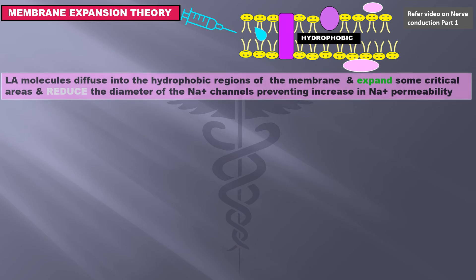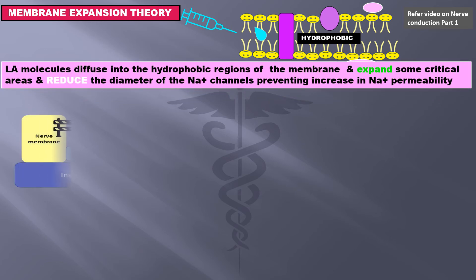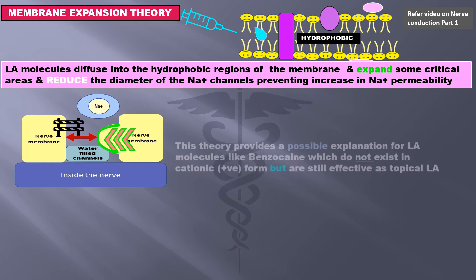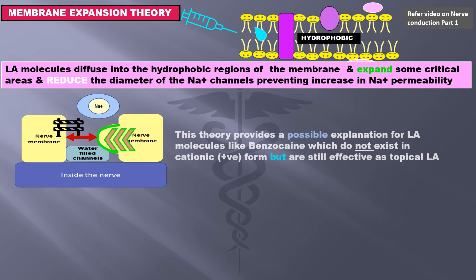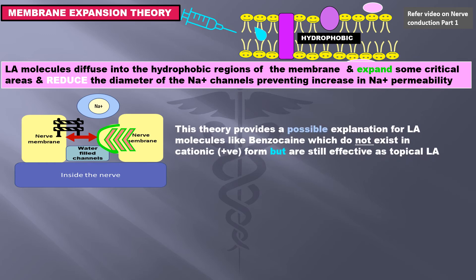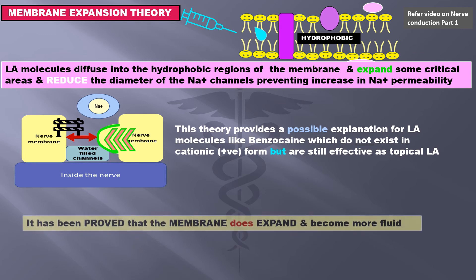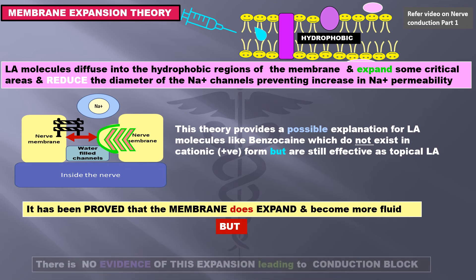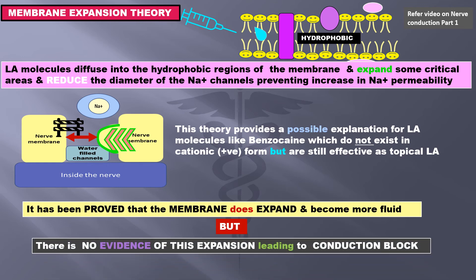The membrane expansion theory states that local anesthetic molecules diffuse into the hydrophobic regions of the membrane and expand some critical areas, reducing the diameter of the sodium channels, thus preventing increase in sodium permeability. This theory provides a possible explanation for local anesthetic molecules like benzocaine, which do not exist in cationic form but are still effective as topical local anesthetics. It has been proved that the membrane does expand and become more fluid, but there is no evidence of this expansion leading to conduction block. However, this theory has given way to the next theory.